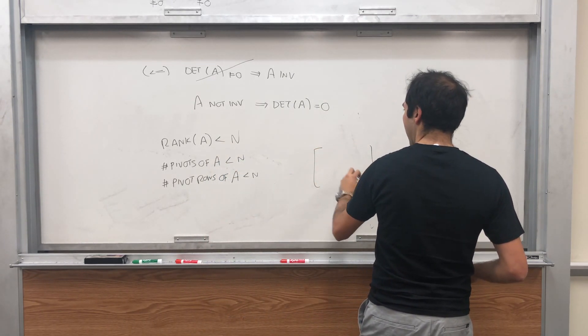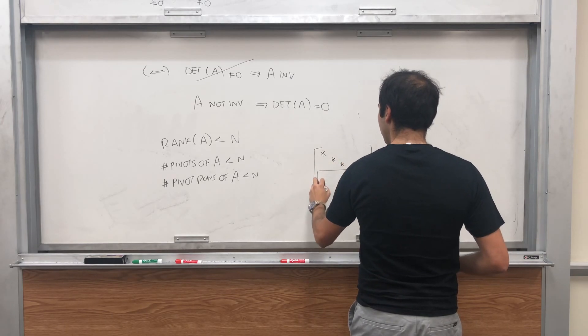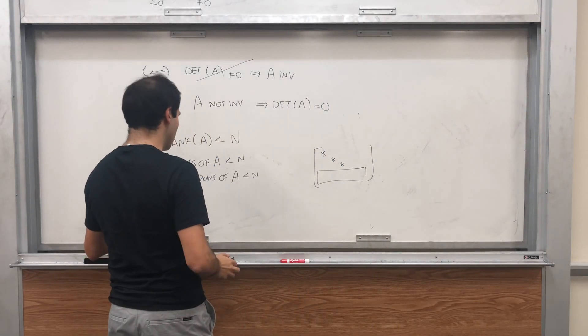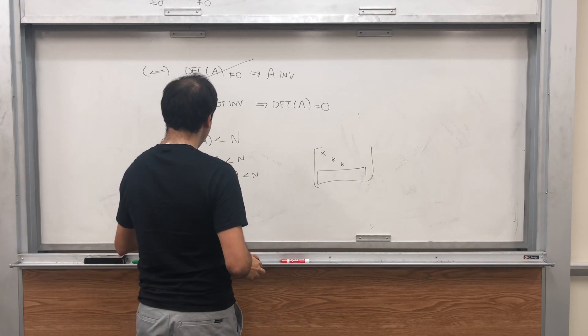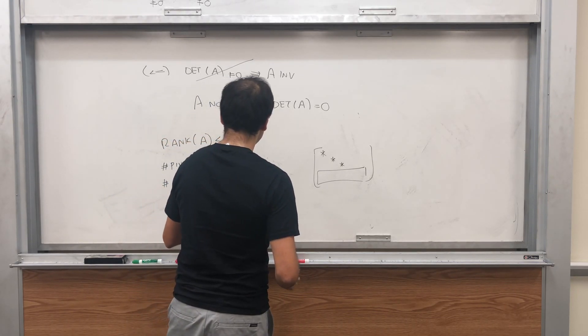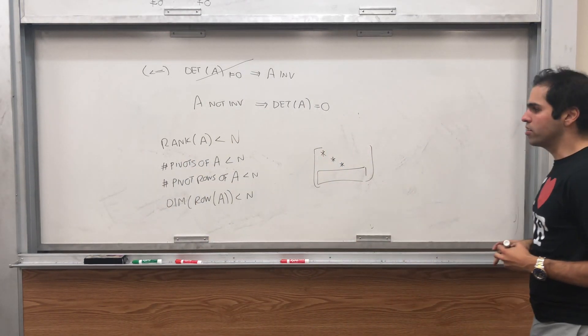So we have some matrix A, and there's a pivot in a bunch of rows. But there is, for example, the last row doesn't have a pivot. In particular, in terms of the row space, it means that the dimension of the row space is less than N, where the row space is just the span of the rows of A.